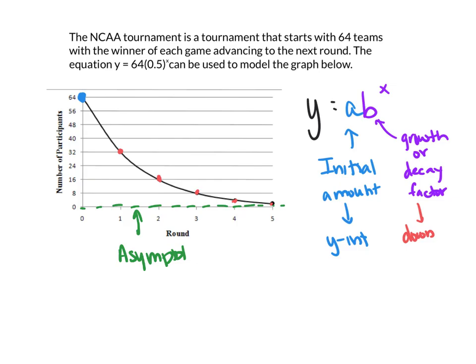This particular value, you can't be below zero teams because you no longer have a tournament. And so that value occurs right here at the fifth round. So the fifth round, you're going to only have your winner, your two teams that are left standing.